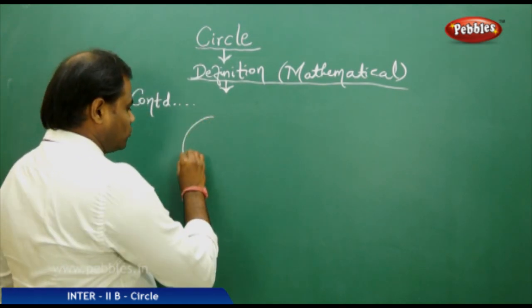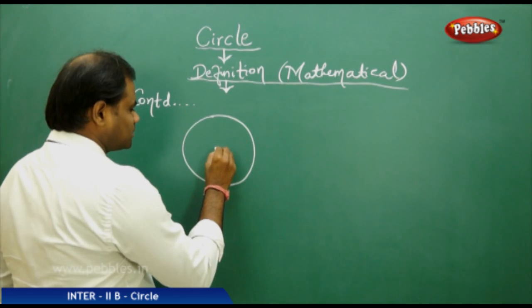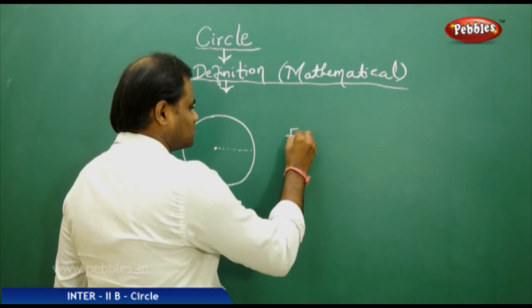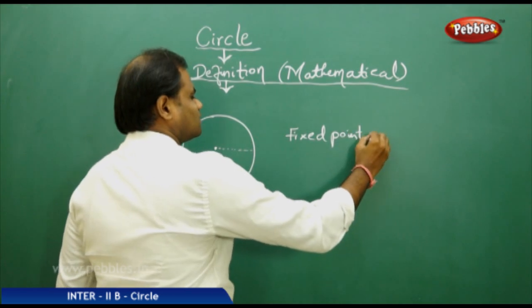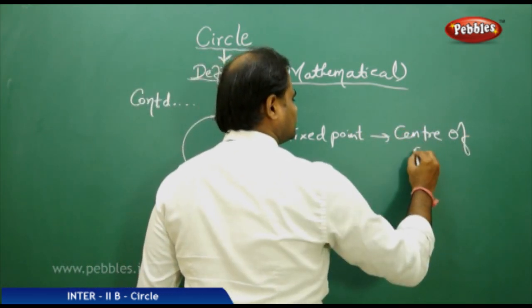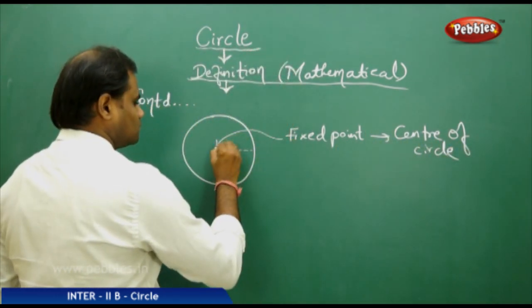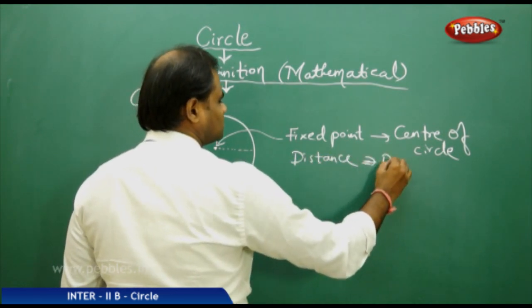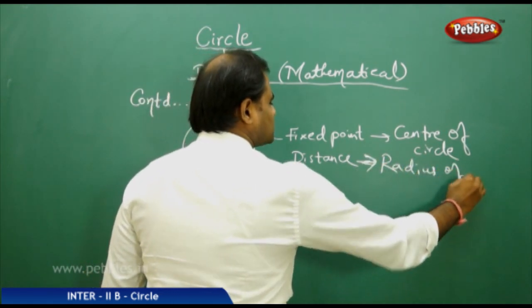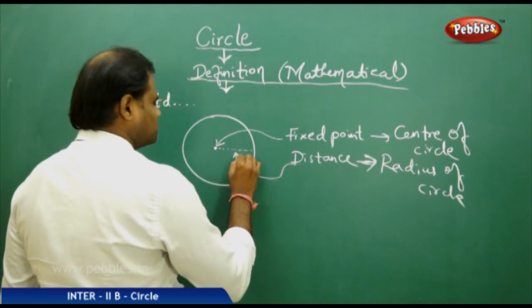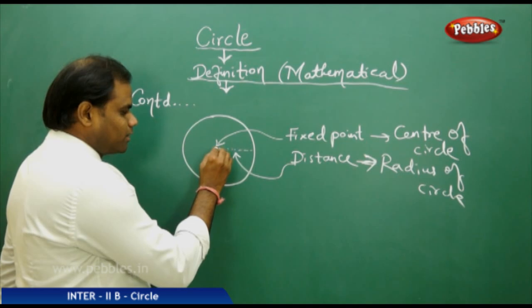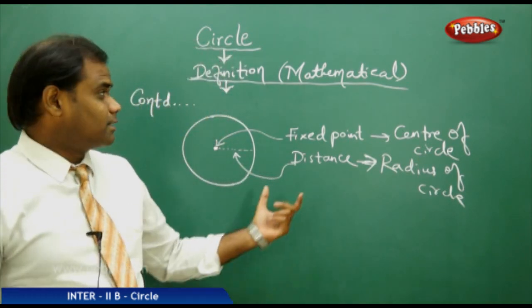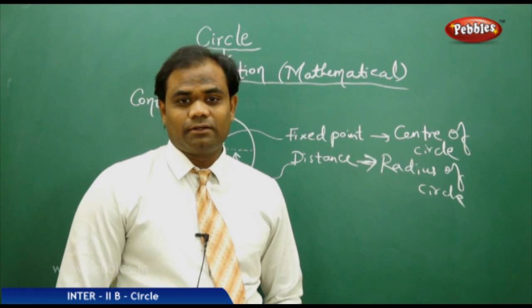For a circle, the fixed point which is equidistant to any point on the rim or circumference of the circle is called the center of the circle, and the distance from the center to the circumference is called the radius of the circle. So the center is the fixed point and the radius is that distance. Center and radius together define a circle in the mathematical sense.